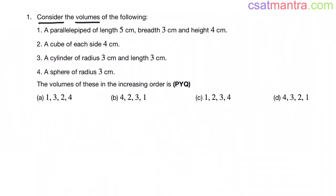Consider the volumes of the following: A parallelepiped of length 5 cm, breadth 3 cm and height 4 cm. A cube of each side 4 cm. A cylinder of radius 3 cm and length 3 cm. A sphere of radius 3 cm. The volumes of these in the increasing order.